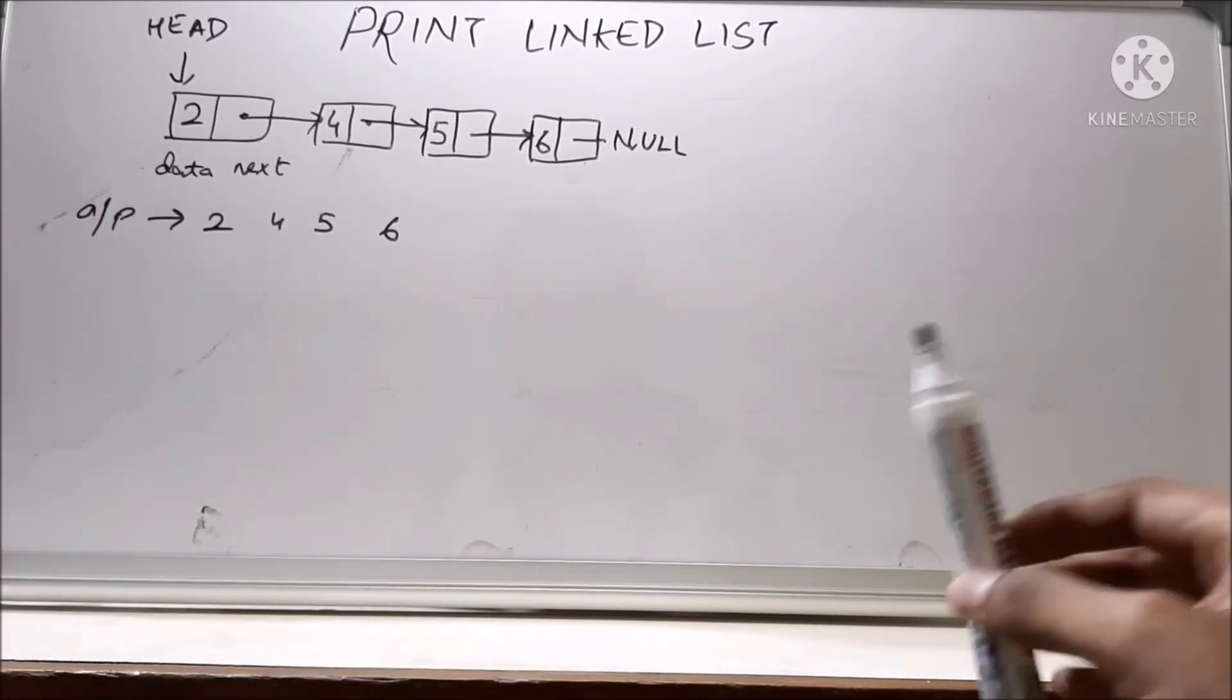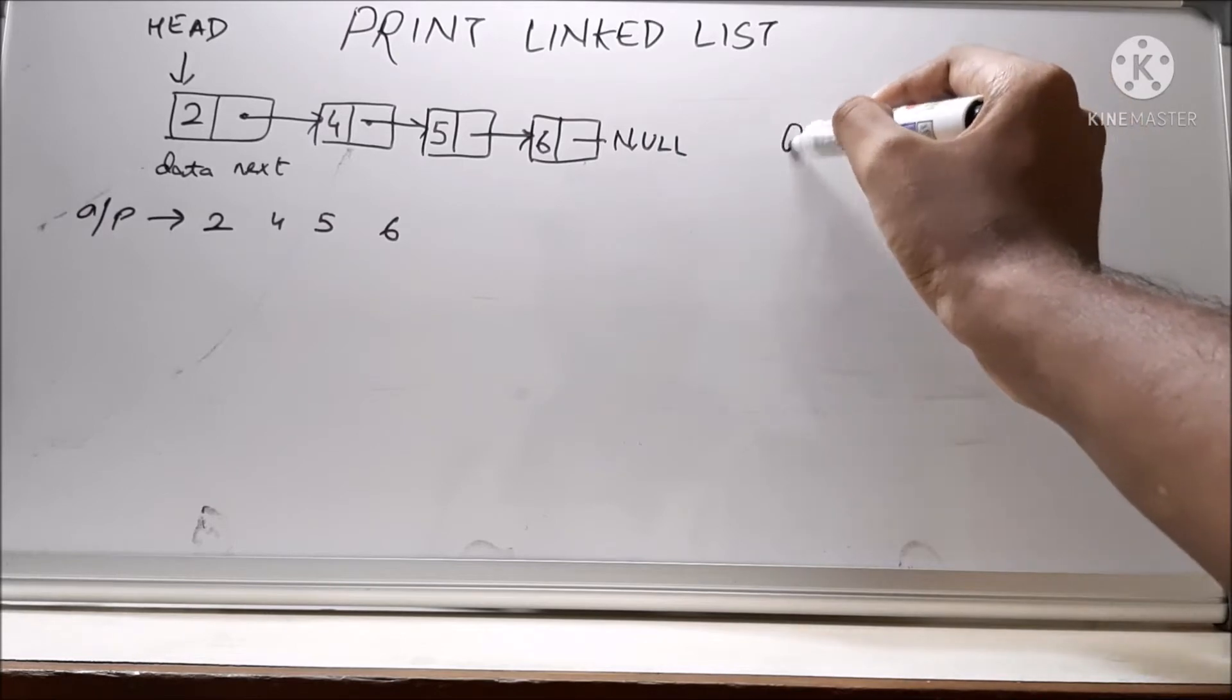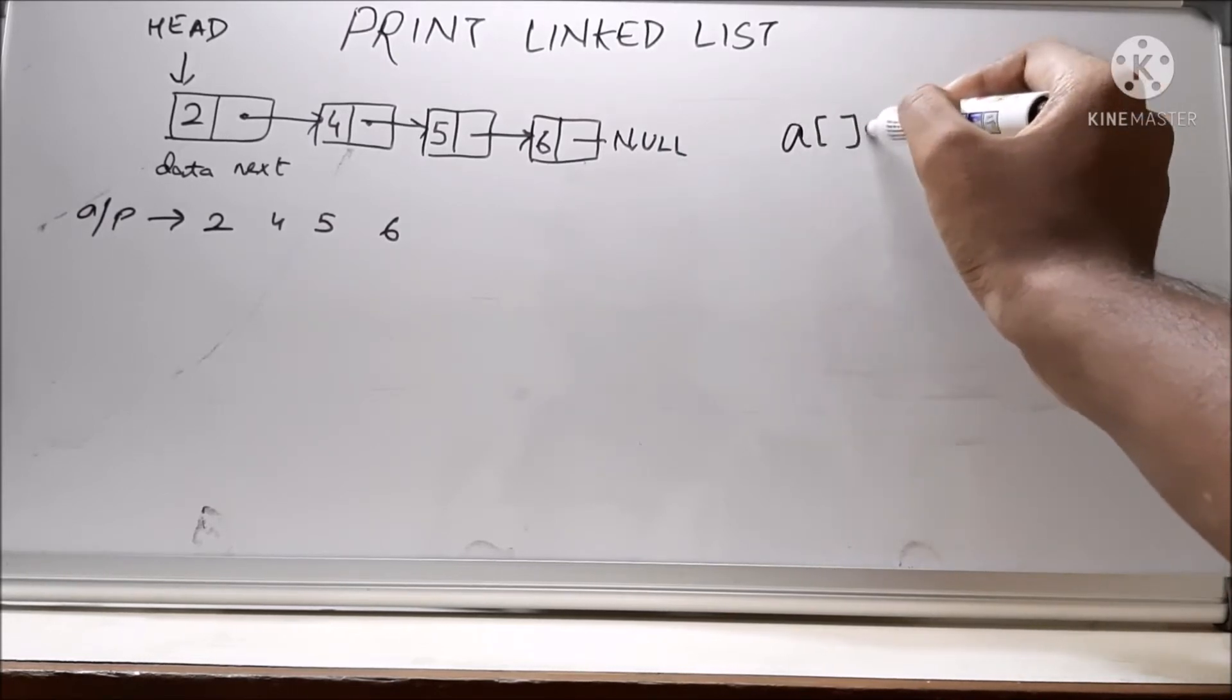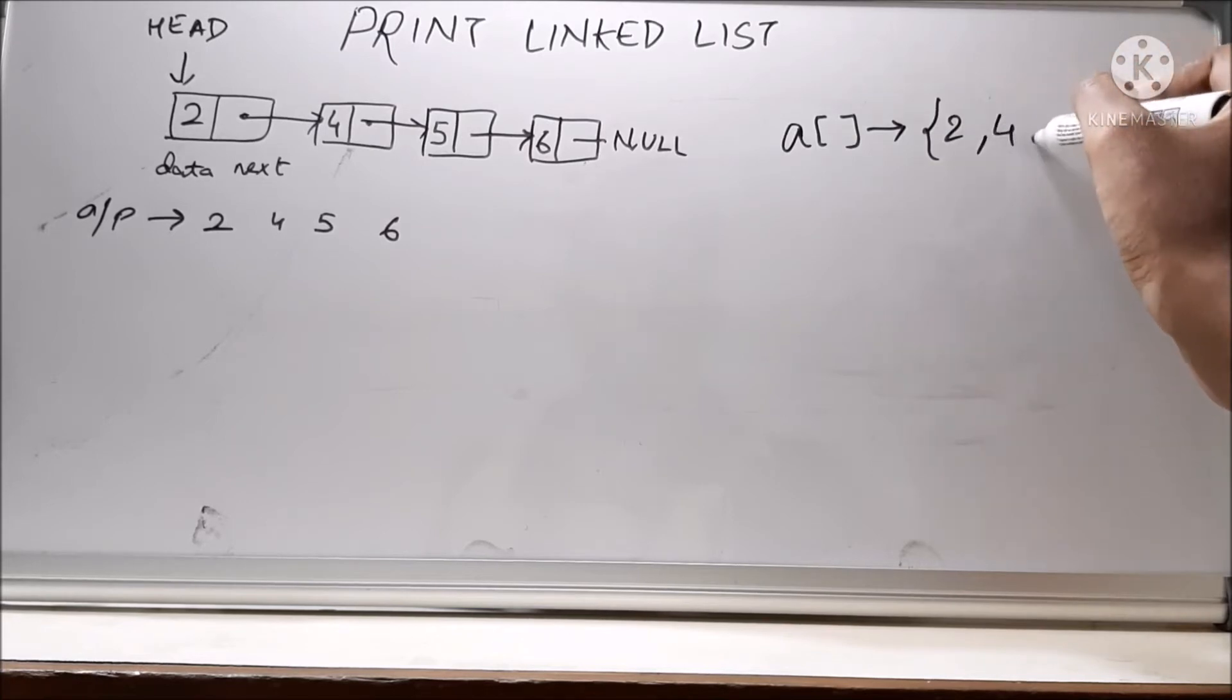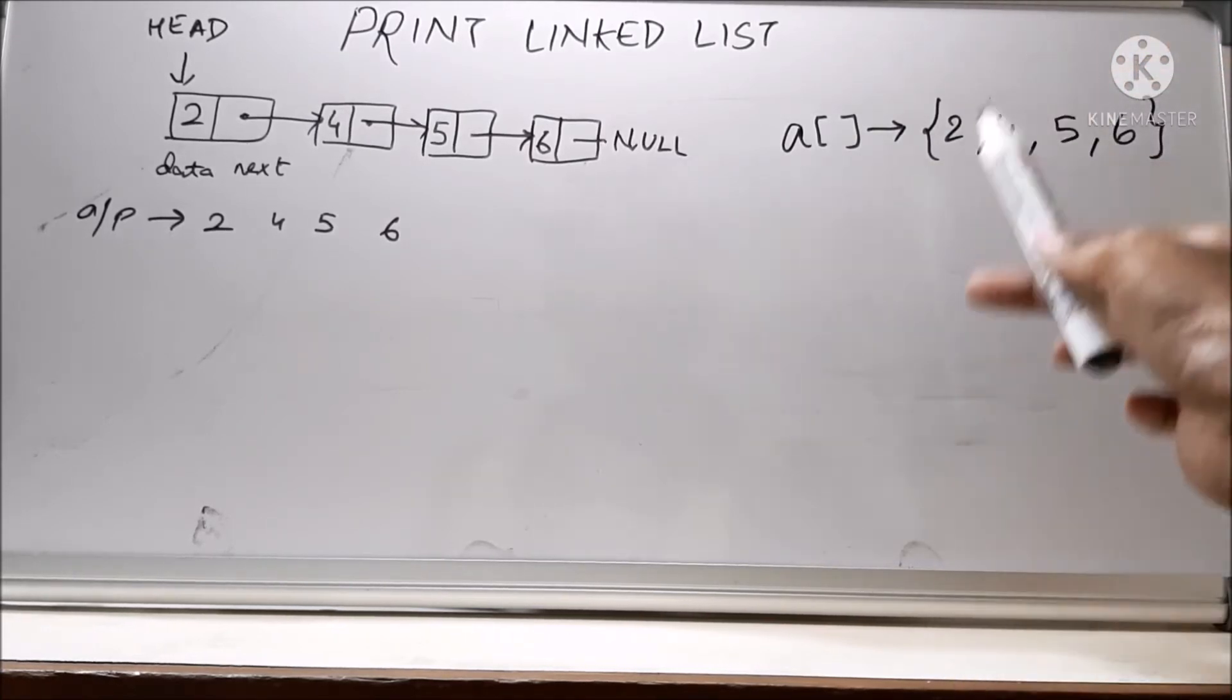So let me just compare this with an array. Let's say we have an array which has elements 2, 4, 5 and 6. So how are we going to print this?